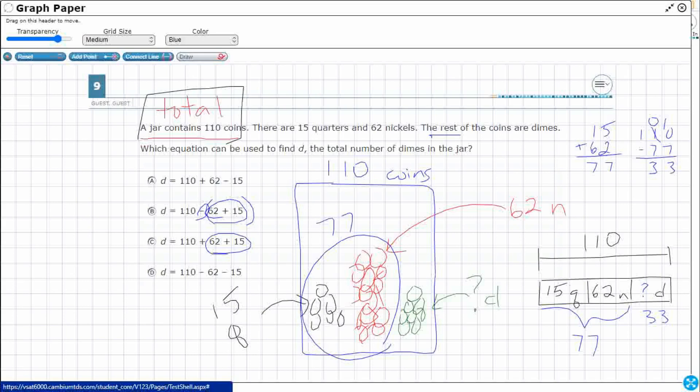What this is going to do in B is that's going to subtract the 62 and then add the 15. If I were just to start from the 110, you know what I would do? I would subtract this 15 and I would subtract that 62. So even though that's kind of close, it doesn't include parentheses. So I'm going to need D.